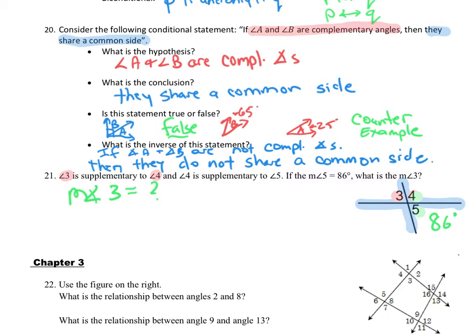Looking at the diagram, angle 3 and angle 5 are vertical angles. The problem gives supplementary information, but vertical angles are congruent — so if angle 5 is 86 degrees, angle 3 is also 86 degrees. We don't have to do any computation or addition.